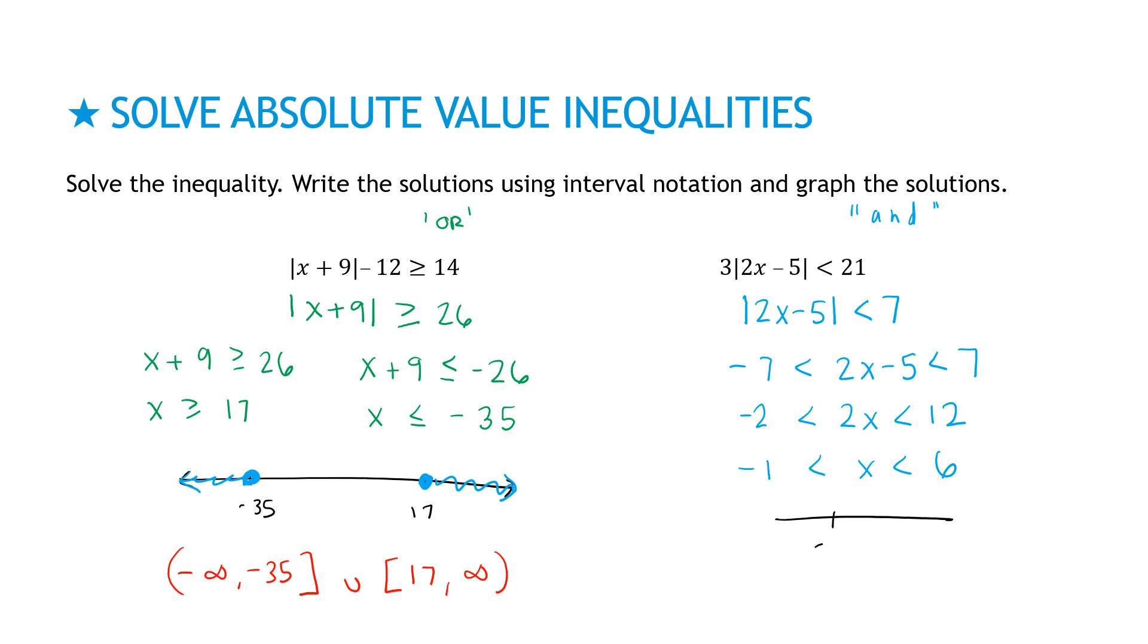My graph, obviously not drawn to scale, would have an open circle at negative 1 and open circle at 6 and be shaded between those two values. And my solution in interval notation, very similar, negative 1 to 6. Since they're both open circles, they're both open brackets.